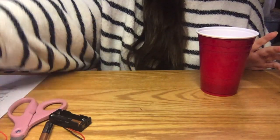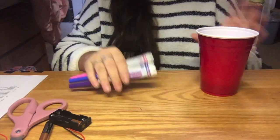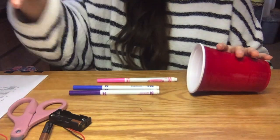Okay, so the first step of this project is you're going to take your three markers and tape them to the inside of the cup using electrical tape.